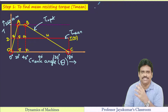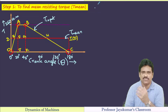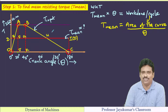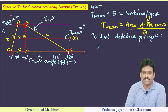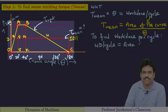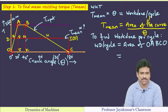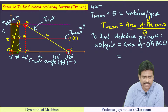Our aim is to find delta E, for which we first need T_mean. T_mean multiplied by theta equals work done per cycle. Work done per cycle equals the area of the turning moment diagram OABCO. Since it is a composite area, I can split it into: triangle OAJ, rectangle ABKJ, and right-angle triangle BKC.